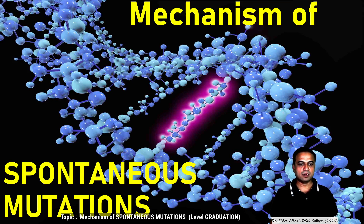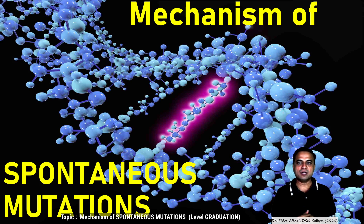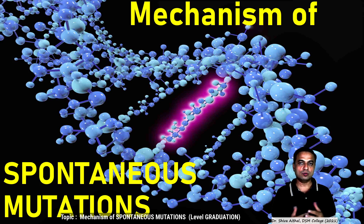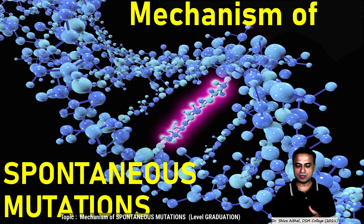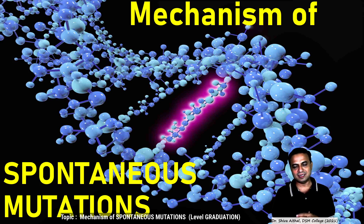Hello and once again welcome to our continuing discussions on mutations. Today I would like to elaborate on the mechanisms of spontaneous mutation. In nature, mutations can occur in two ways: one is spontaneously without any reason, and the second is induced. The induced mutation will be a part of my second lecture. Today we will focus on what are the reasons which give rise to a spontaneous mutation in any cell.